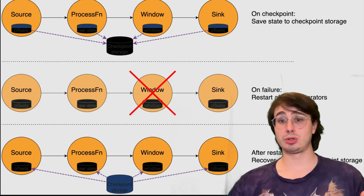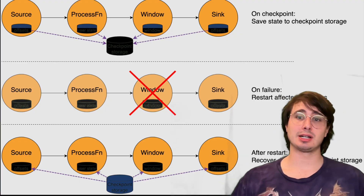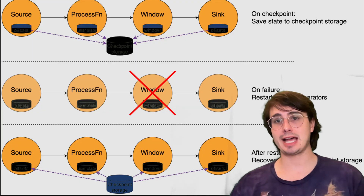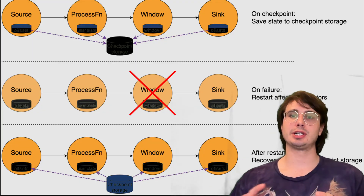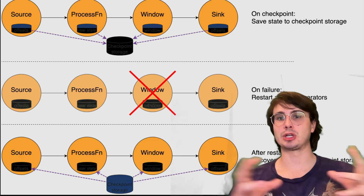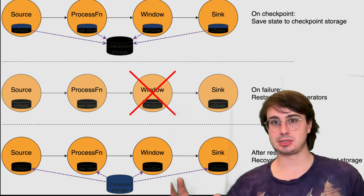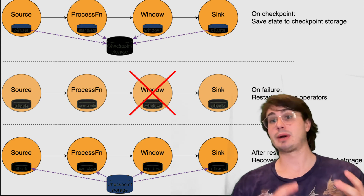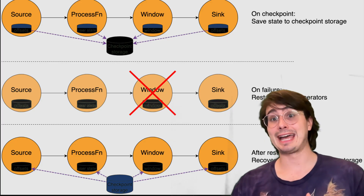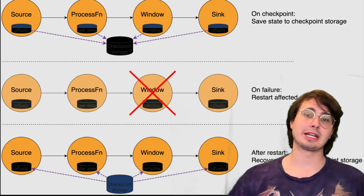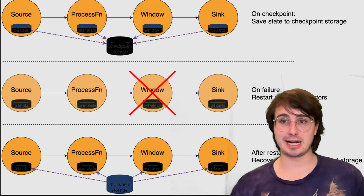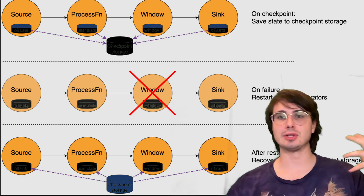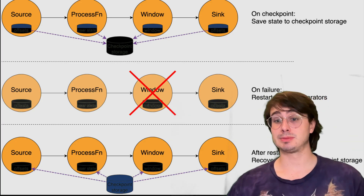Exactly-once semantics require coordination between Flink and external systems. For end-to-end exactly-once processing, make sure your sources support replay from specific offsets and your sinks support transactional writes. The two-phase commit protocol used for exactly-once sinks adds latency, so consider whether at-least-once processing might be sufficient in your use case, since exactly-once requires a lot of additional compute power.